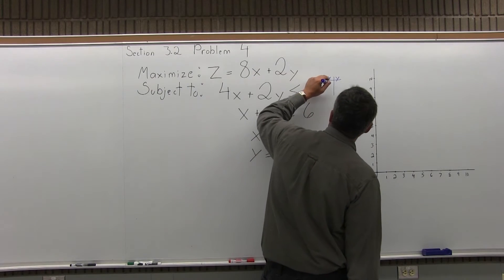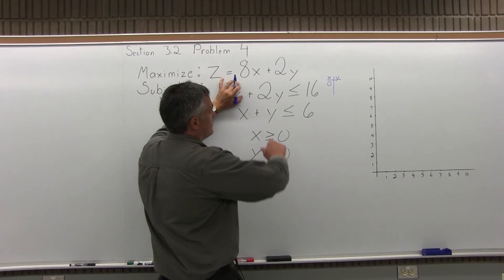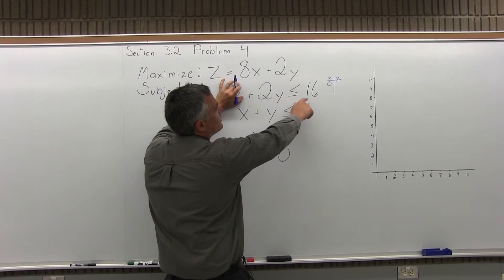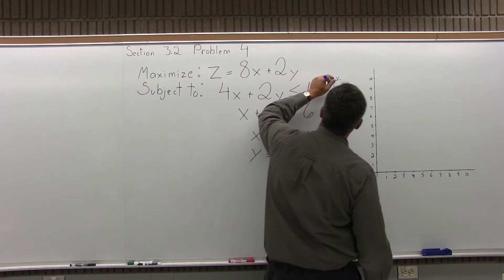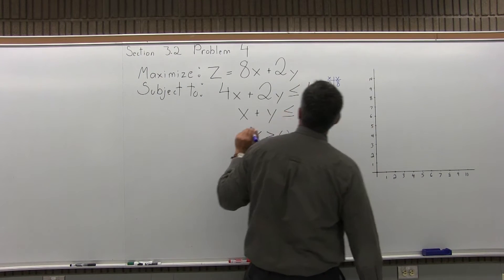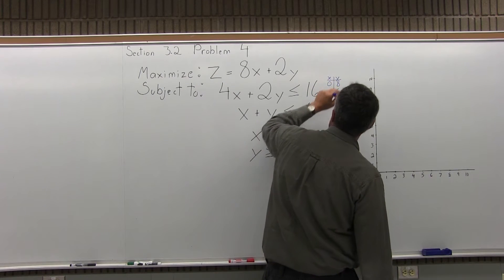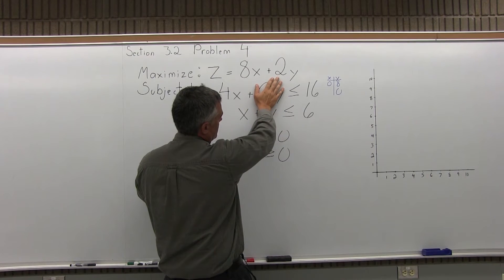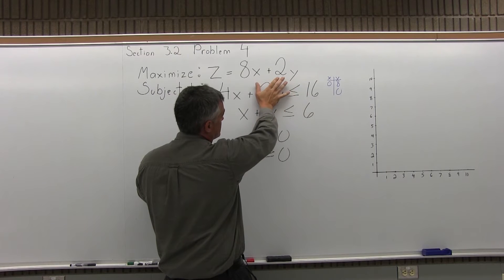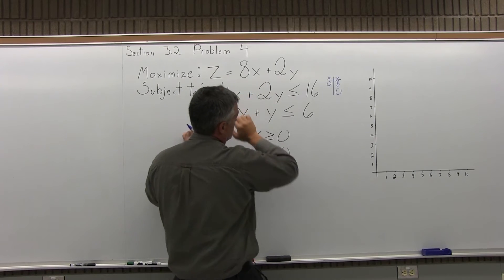First, I'm going to let x equal 0, so 4x becomes 4 times 0, giving me the equation 2y equals 16. Pretending it's equal, to get 16 equals 16, y would need to be 8. Next, I get the other point by letting y equal 0. The 2y goes away, and I have 4x equals 16, so x would have to be 4.